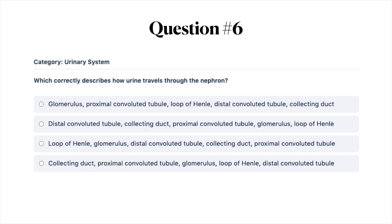Next question: which correctly describes how urine travels through the nephron? A, glomerulus, proximal convoluted tubule, loop of Henle, distal convoluted tubule, and then collecting duct; or B, distal convoluted tubule, collecting duct, proximal convoluted tubule, glomerulus; or D, collecting duct, proximal convoluted tubule, glomerulus, loop of Henle, and then distal convoluted tubule.